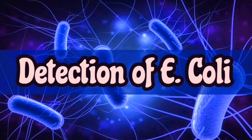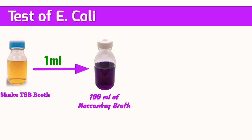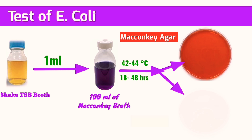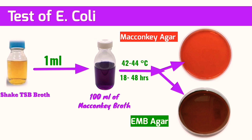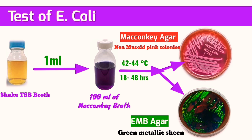For E. coli detection: after incubating the tryptone broth for one day, shake the broth well and transfer 1 ml into 100 ml of MacConkey broth and incubate at 42 degrees Celsius for one to two days. After incubation, streak onto MacConkey agar and Eosin Methylene Blue agar, which favor the growth of E. coli. On MacConkey agar, growth of non-mucoid pink colonies indicates the presence of E. coli. On Eosin Methylene Blue agar, growth of green metallic sheen also indicates the presence of E. coli.